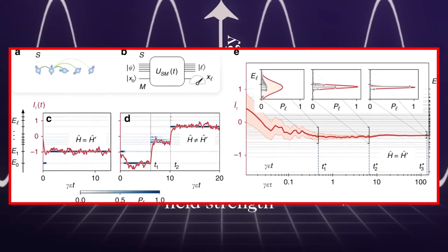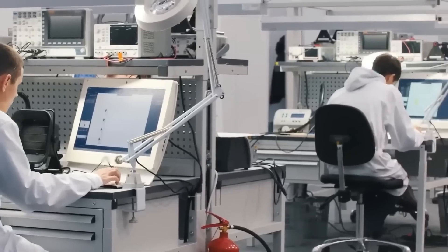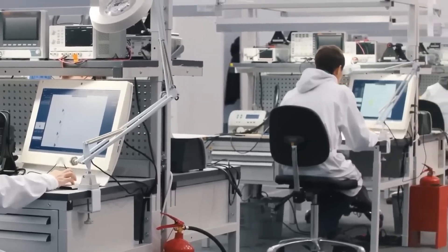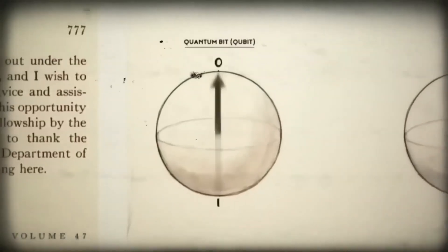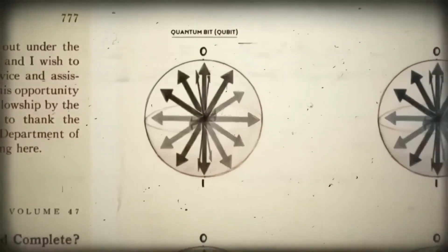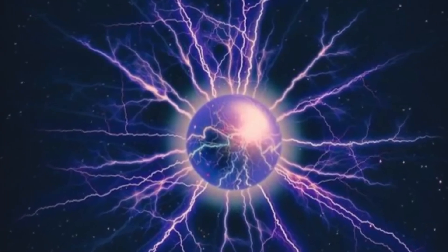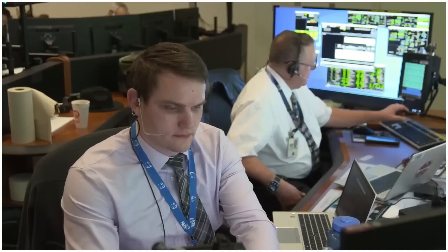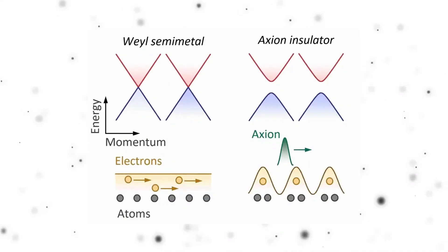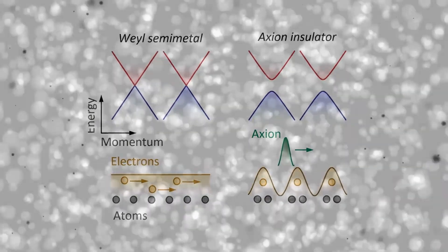The challenge: axions are extremely difficult to detect due to their weak interaction with ordinary matter. Enter quantum computers, machines designed to exploit the bizarre principles of quantum mechanics such as superposition and entanglement to perform calculations far beyond the capabilities of classical computers.